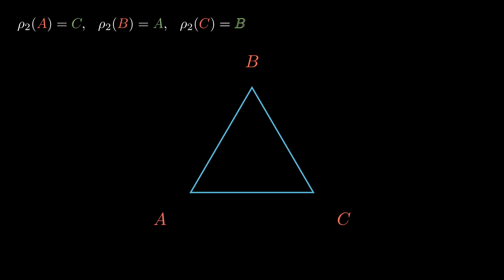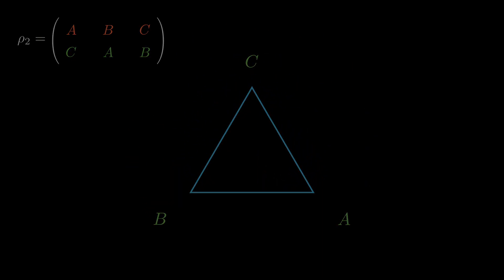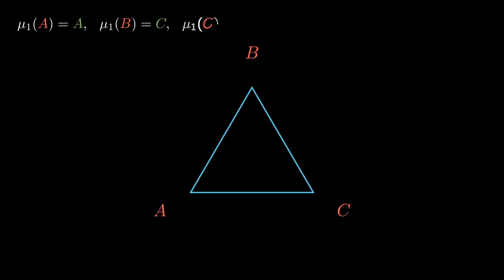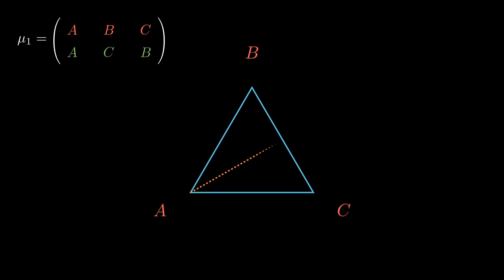The third permutation is rot2, which sends A to C, B to A, and C to B. This is a 240-degree clockwise rotation of the triangle. The fourth permutation is mu1, which sends A to A, B to C, and C to B. This corresponds to a reflection over the altitude that extends from the bottom left vertex.